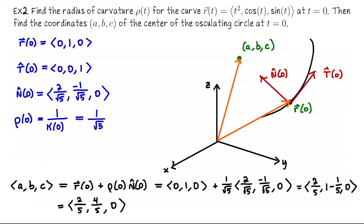The osculating circle lives in the osculating plane, which is the plane containing T and N. The orthogonal vector for that plane is actually B-hat, which we never needed to find in this problem. The center of the circle is (2/5, 4/5, 0) and the radius of the circle is 1/√5.